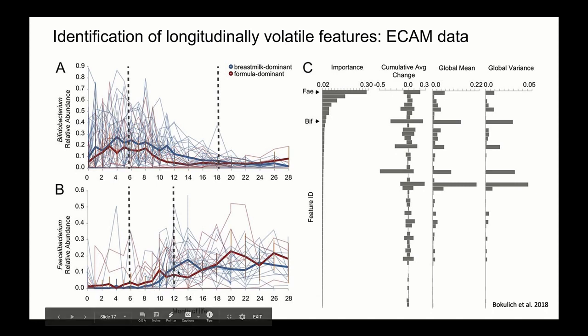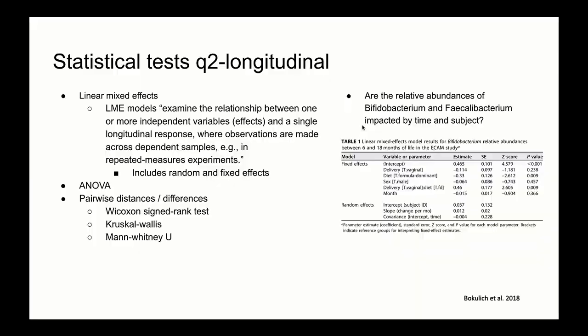Another thing to keep in mind in these plots is the individual variation. Each of the smaller, thinner lines represent the spaghetti lines, which stand for a single subject — you can see that there's a high degree of variation occurring in these plots. Because the feature volatility action is largely exploratory, we can use other actions in the QIIME 2 longitudinal plugin to support our results.